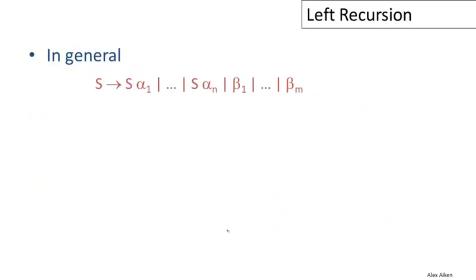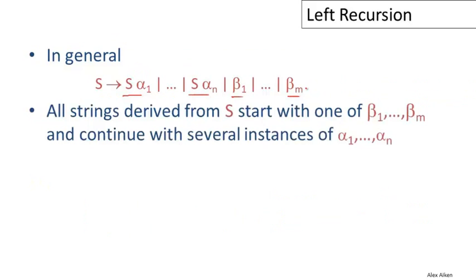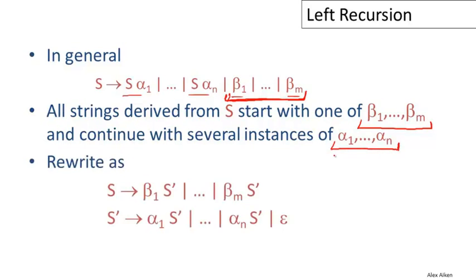So in general, we may have many productions, some of which are left recursive and some of which are not. And the language produced by this particular form of grammar here is going to be all the strings that are derived from S that start with one of the betas. So one of the things here that doesn't involve S and then continues with zero or more instances of the alphas. And we can do exactly the same trick. This is just generalizing the idea that we had before where we only had one beta and one alpha to many betas and many alphas.